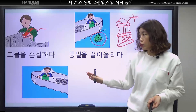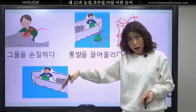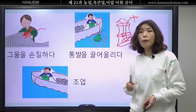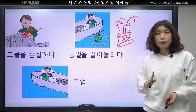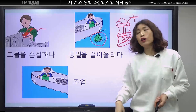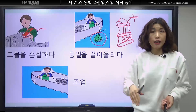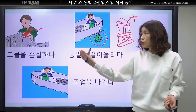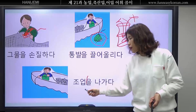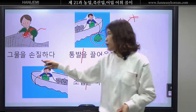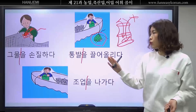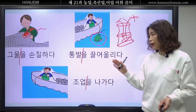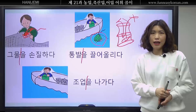물고기를 잡으러 바다에 나가요. 물고기를 잡기 위해서 바다에 나가는 거를 조업이라고 합니다. 강에 나가도 조업 맞아요. 조업을 나가다. 그물, 통발, 조업 이렇게 명사도 다 기억을 하세요. 그리고 그물을 손질하다, 통발을 끌어올리다, 조업을 나가다 모두 알아야 합니다.